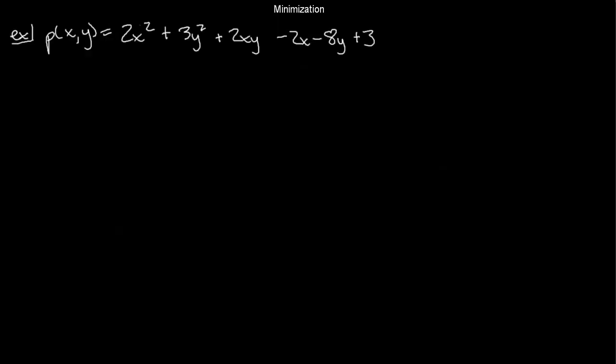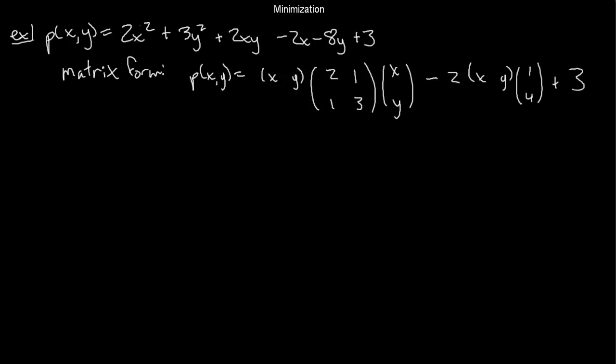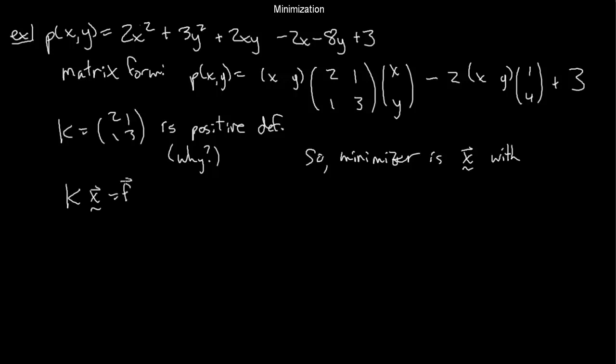Suppose that I start with this quadratic: p(x,y) = 2x² + 3y² + 2xy - 2x - 8y + 3. I'm going to put this into matrix form. It's (x y) times the matrix [2,1; 1,3] times (x y) again, row then matrix then column, minus 2 times (x y) times the f is (1,4) plus 3. You can verify that that's correct. If you look at this matrix k, it is indeed positive definite. We should check that this is a positive definite matrix.